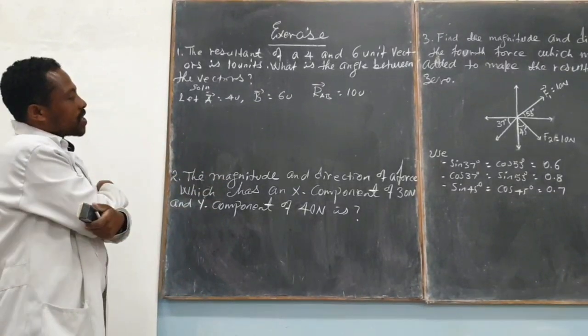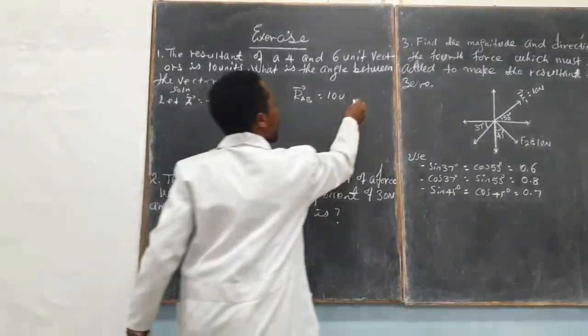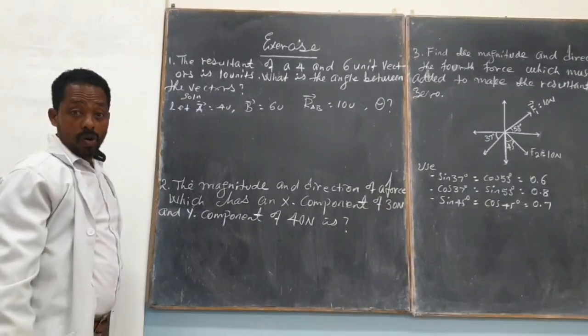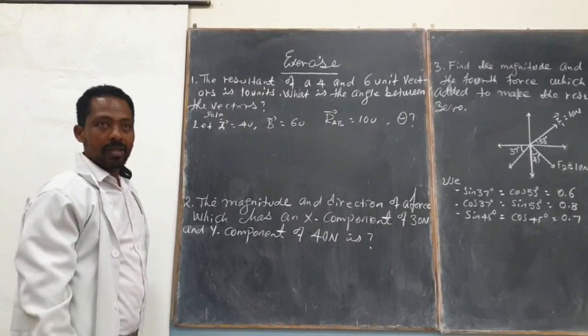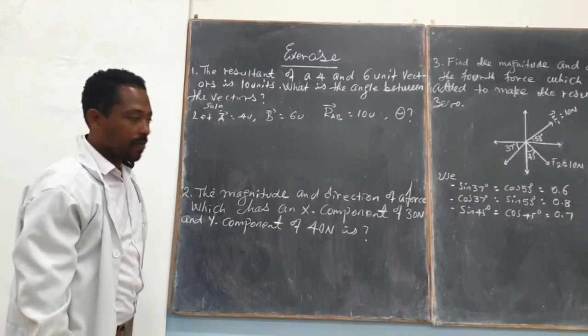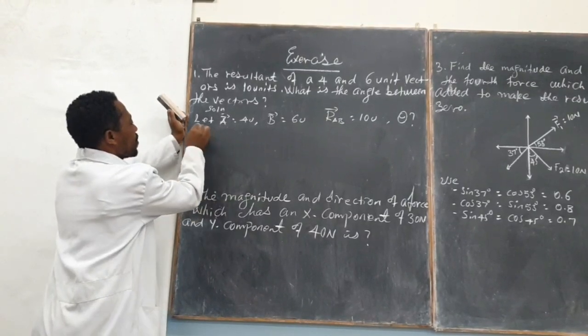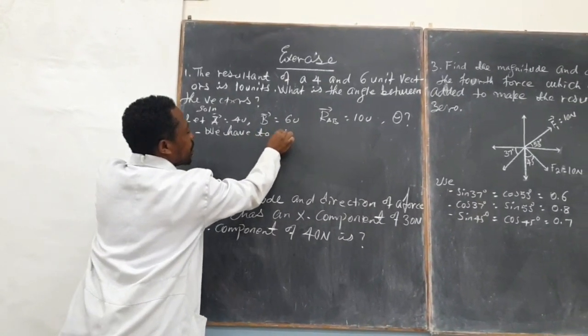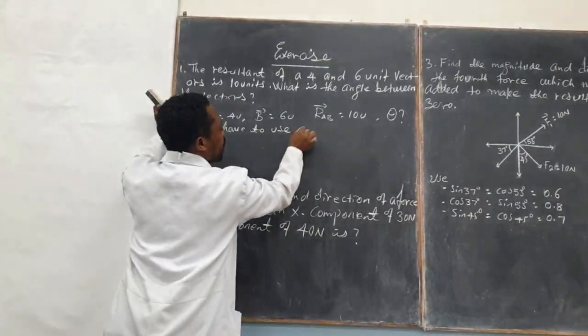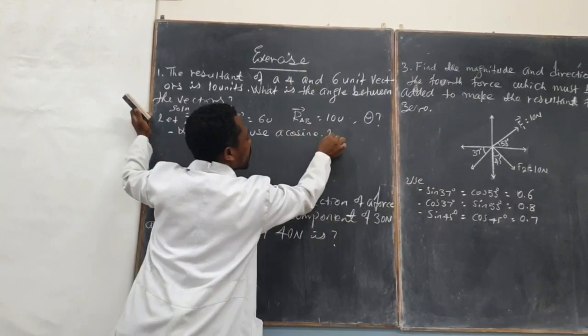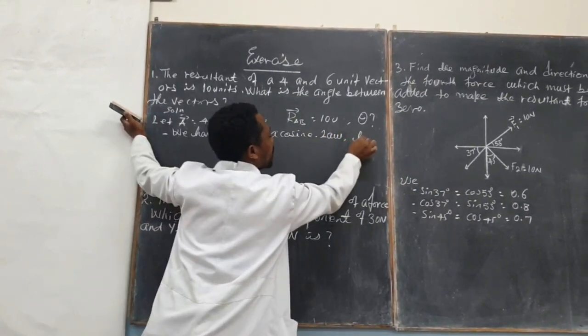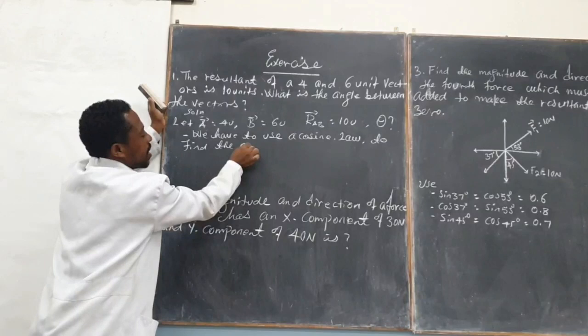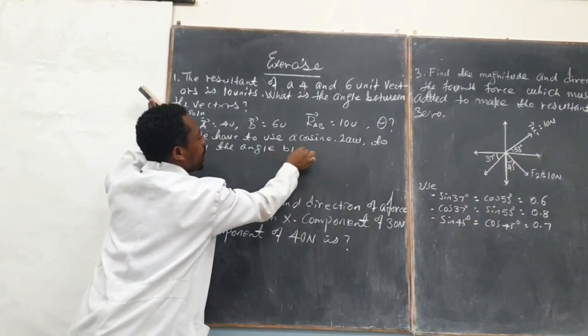So we are requested to find the angle between the two vectors. To do so, as I said, we have to use a cosine law to find the angle between them.